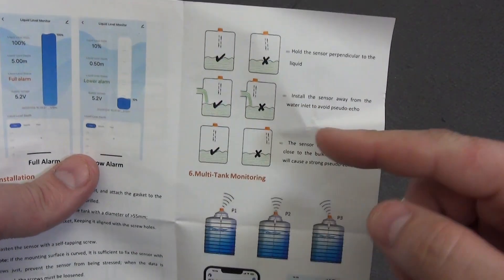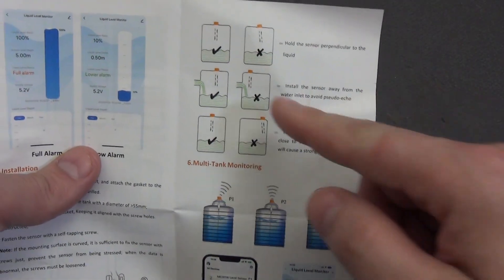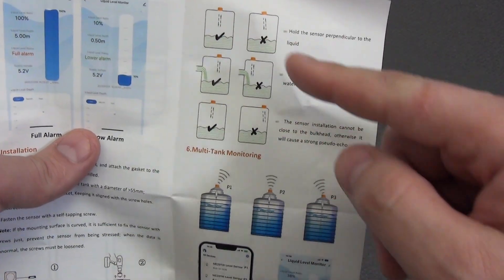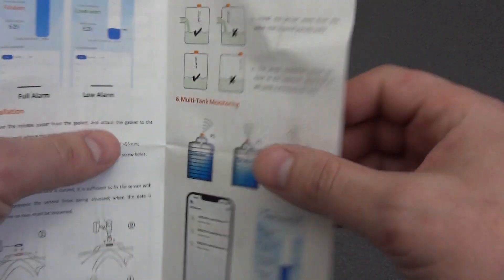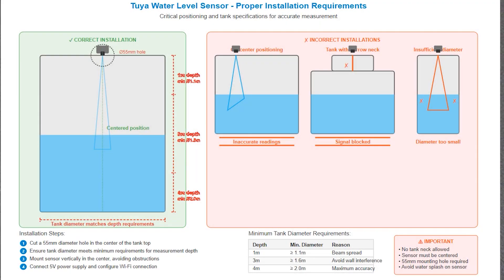In this sensor, correct installation is important. This point is in the instructions, so that the sensor is in the center of the upper part of the tank, so that when pouring water into the tank it does not block the view of the sensor. Also, the tank should not have a neck, and the minimum diameter at a depth of 4 meters should be at least 2 meters. At a depth of 3 meters, the diameter is more than 1.6 meters, and at a depth of a meter, the diameter must be more than 1.1 meter. The diameter of the hole for the sensor in the tank should be about 55 millimeters.